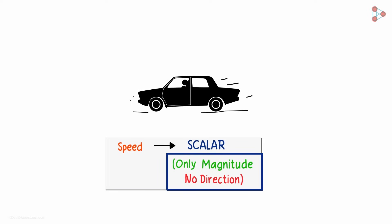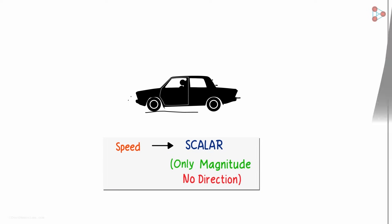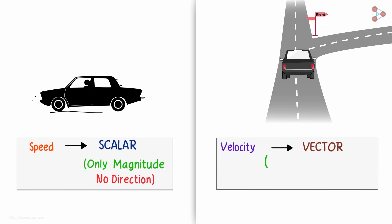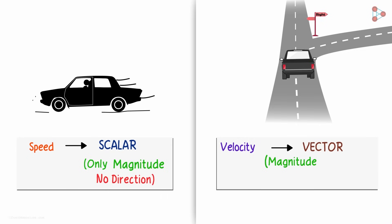Only magnitude but no direction. In the case of velocity, however, the direction is stated and that's why it is referred to as the vector quantity. A vector quantity involves not just the magnitude but also the direction.